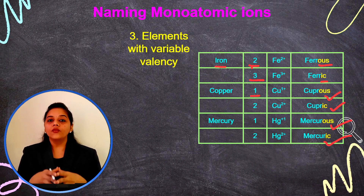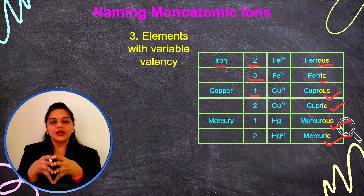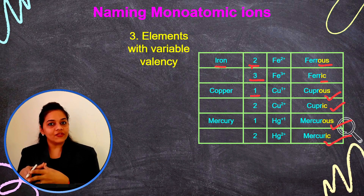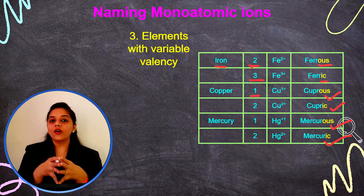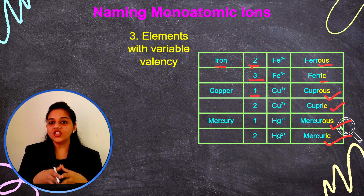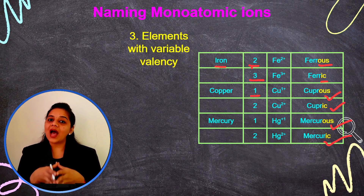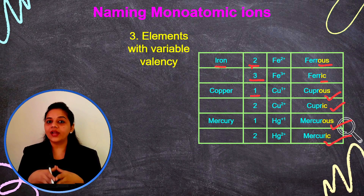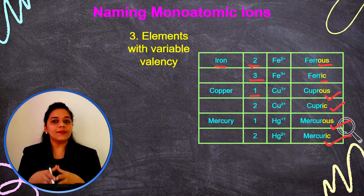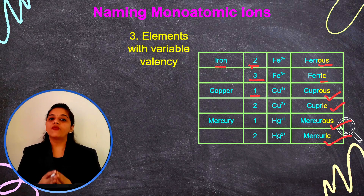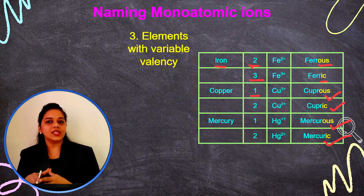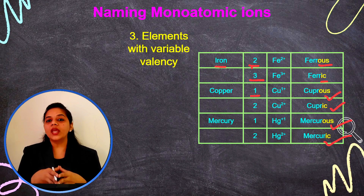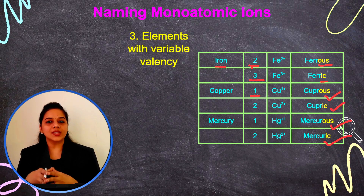To summarize monoatomic ion naming: for a positive ion, we write the element name followed by 'ion'. For a negatively charged radical, we add '-ide' as the suffix — oxide, hydride, chloride. For elements with variable valency, we add '-ic' for the higher valency and '-ous' for the lower valency.